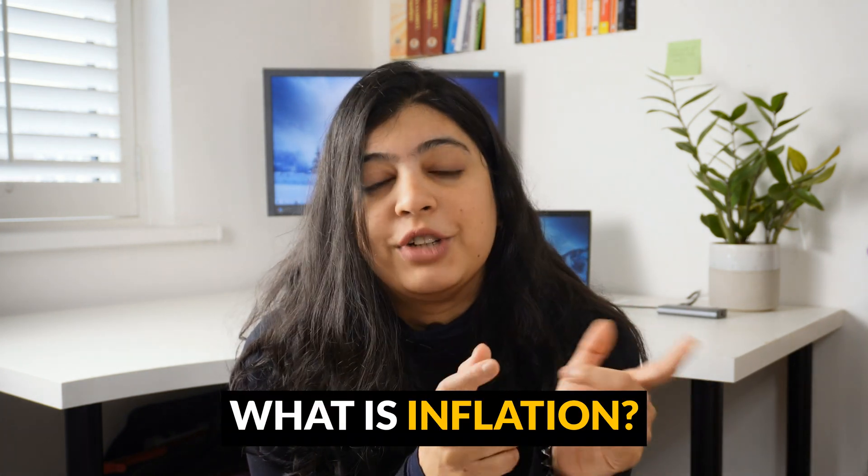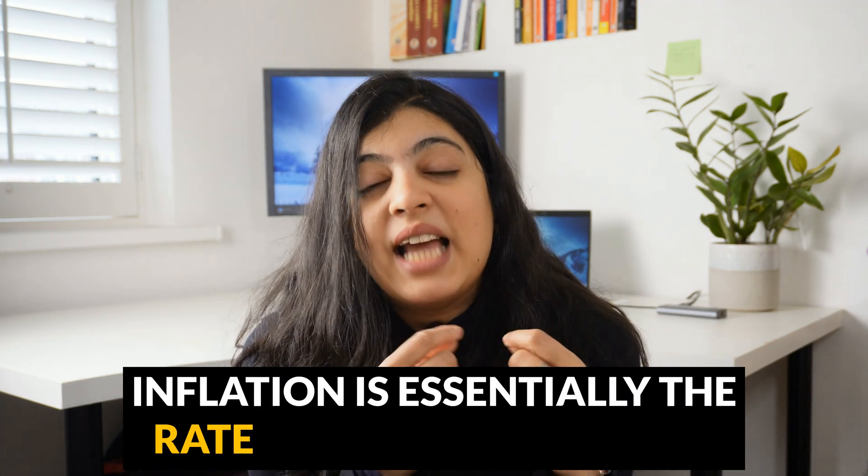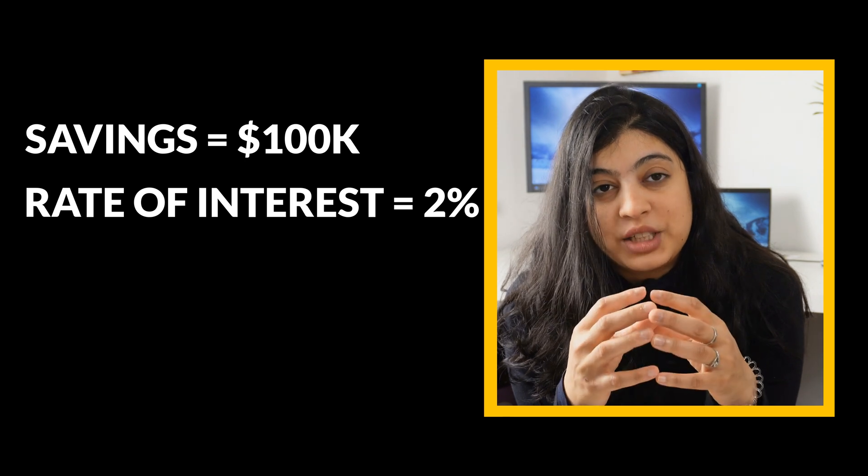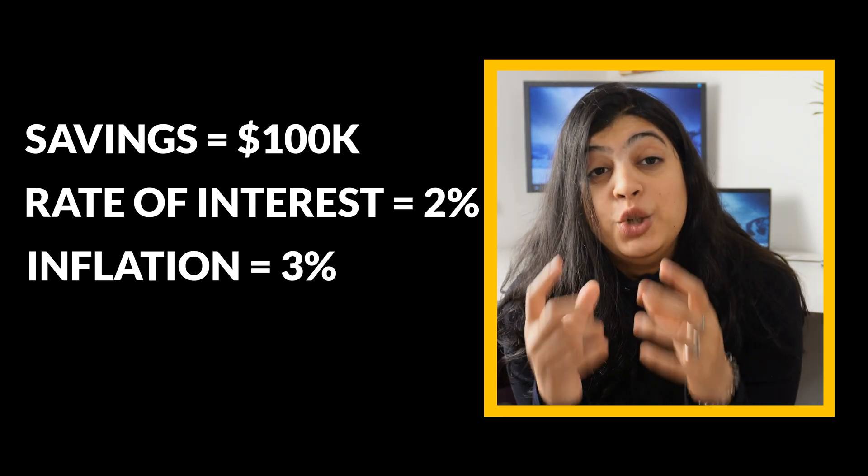Let me take a moment to talk about inflation. What is inflation? Inflation is essentially the rate at which prices rise — not how much prices rise, but the speed at which they rise. So what used to cost $1 before might cost $5 now, and that is essentially because of inflation. So if you save 100k this year, but your rate of interest is 2% and inflation is 3%, you are actually losing money — which is why it's really useful to factor inflation into your compound interest calculation.